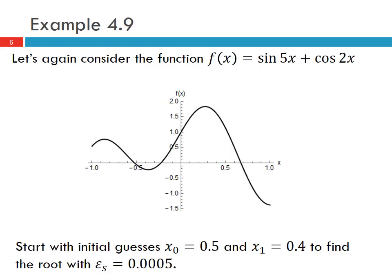Let's look at an example. Again we're going to consider the same function we talked about previously where f(x) equals sin(5x) + cos(2x). We're going to start with two initial guesses x_0 = 0.5 and x_1 = 0.4 to find the root with an error tolerance of 0.0005.